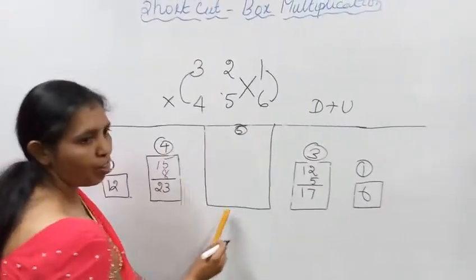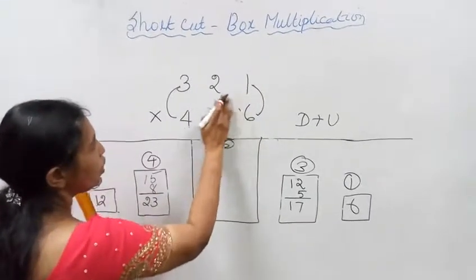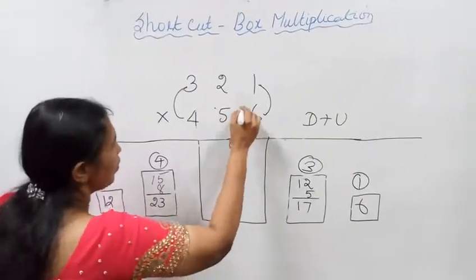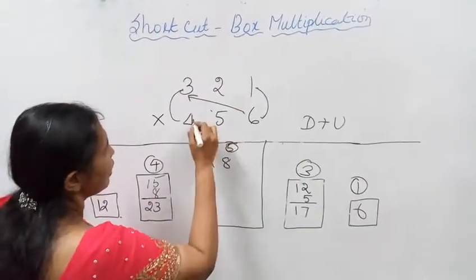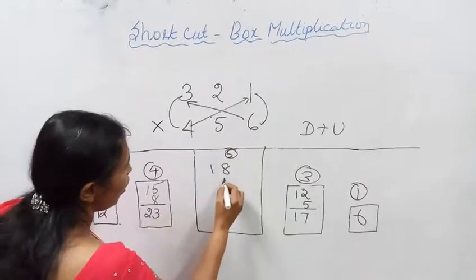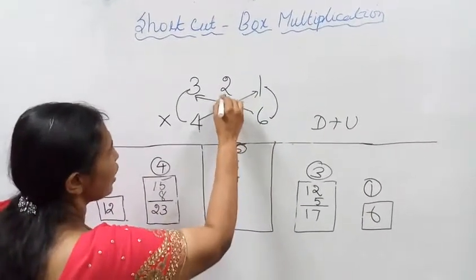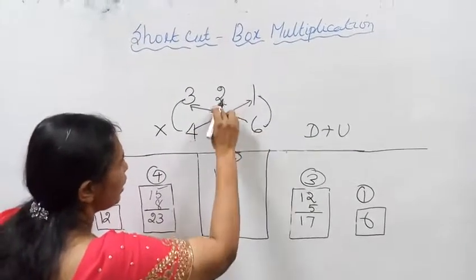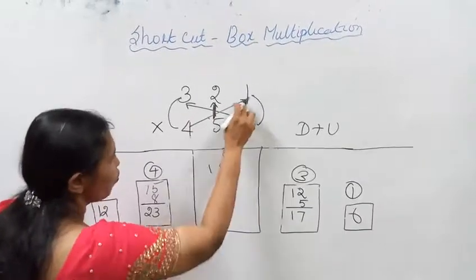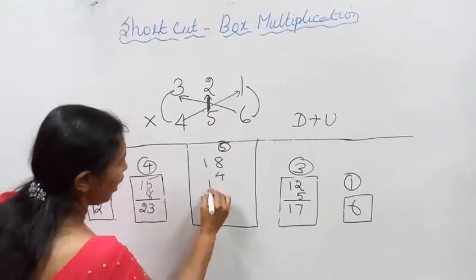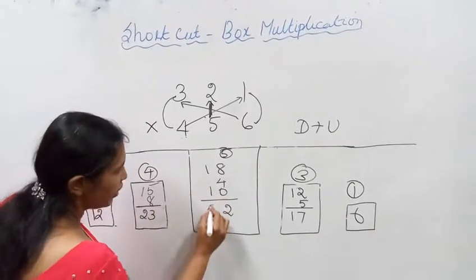Now I am going to do the 5th box — this is a very important one. Which one am I going to multiply? Downward plus upward plus straight: 3 sixes are 18, 4 ones are 4, 5 twos are 10. Therefore, 12 and 32.